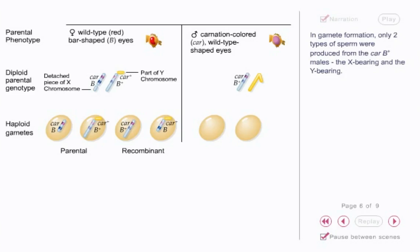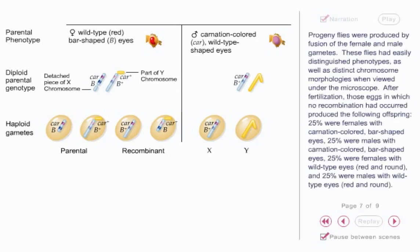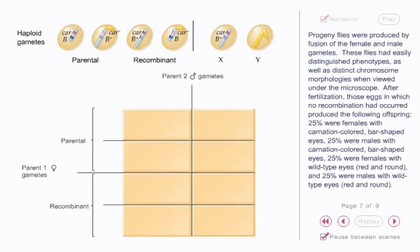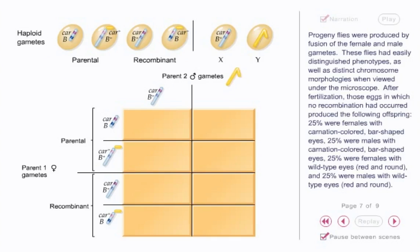In gamete formation, only two types of sperm were produced from the CAR/Bar+ males: the X-bearing and the Y-bearing. Progeny flies were produced by fusion of the female and male gametes. These flies had easily distinguished phenotypes, as well as distinct chromosome morphologies when viewed under the microscope.